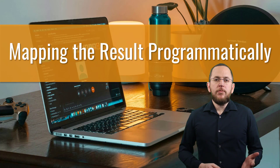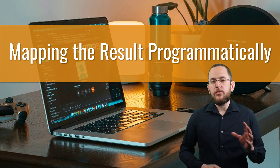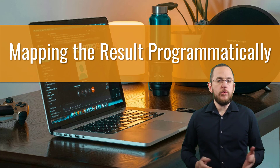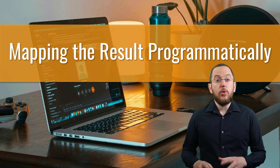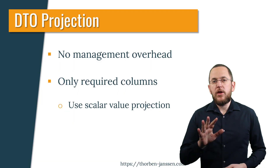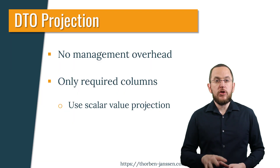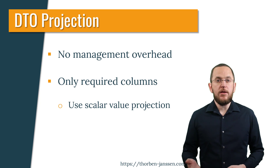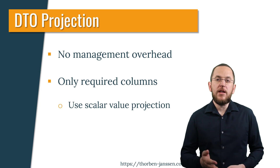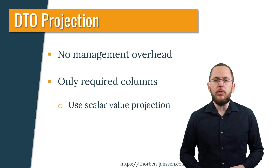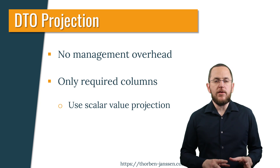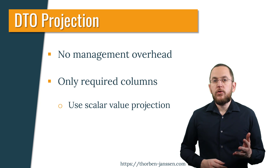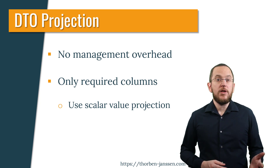The most obvious solution to avoid the described shortcomings of JPA's constructor expressions is to write your own mapping using Java's Stream API. That's a good approach if you need that mapping only for one query. The two main benefits of a DTO projection are that you avoid the management overhead of an entity projection and only select the database columns you need in your business code. If you map the query result yourself, you need to ensure that you keep these benefits. That requires you to use a scalar value projection and not an entity projection.